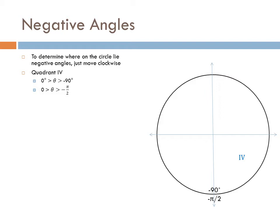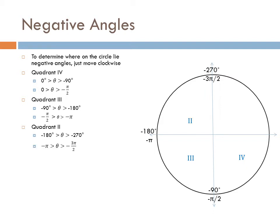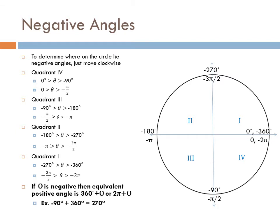Let's look at negative angles. To determine where you lie on the circle, you move clockwise. From 0 to negative 90 is quadrant 4. From negative 90 to negative 180 is quadrant 3. From negative 180 to negative 270 is quadrant 2. And negative 270 to negative 360 is quadrant 1. However, you don't really need to worry about negative angles — all you have to do is add 360 to get the equivalent positive angle. For example, negative 90 plus 360 gives you 270.